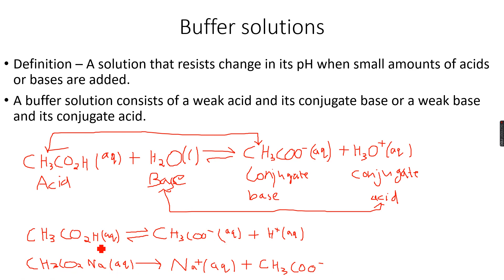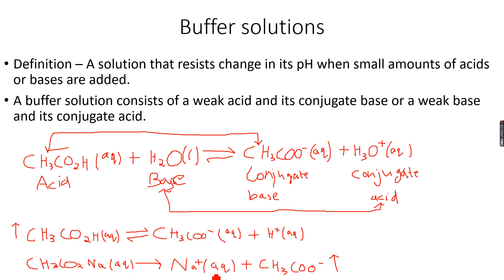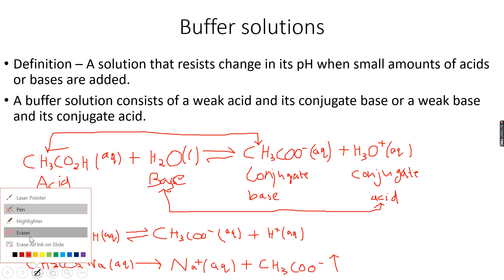Because ethanoic acid only partially dissociates, its concentration will be very high. Because sodium ethanoate completely dissociates, the concentration of ethanoate ions will also be high — equal to the concentration of sodium ethanoate — since all of it dissociates into sodium ions and ethanoate ions. So both the concentration of ethanoic acid and the concentration of ethanoate ions will be high.